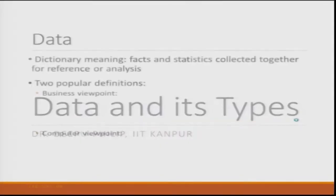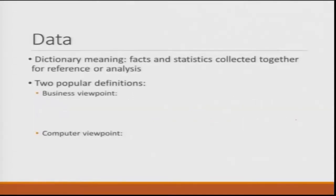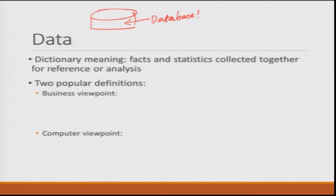With that we start today's lecture: data and its types. Let us start with the first term — data. If you ask somebody to talk about data, sometimes people describe it as something stored in a database — a classical comical diagram. There are many conceptions, misconceptions, and confusions associated with data. The dictionary meaning of data is: facts and statistics collected together for reference or analysis.